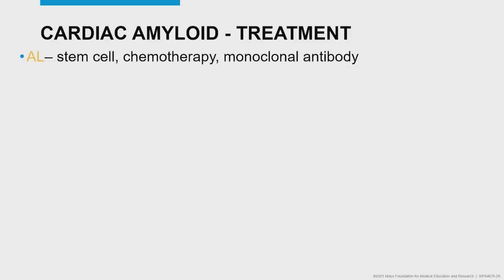AL amyloid is a hematological illness — I tell patients their most important doctor is their hematologist. If found early without advanced multi-organ disease, stem cell treatment has excellent outcomes, with three-year survival in the 90% range. We also have chemotherapy-based therapies and monoclonal antibodies, which are expanding and changing almost monthly.